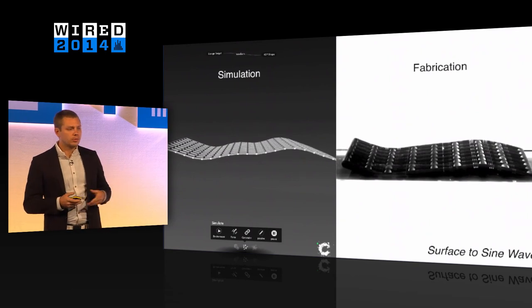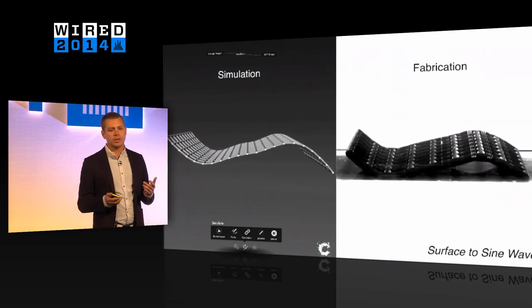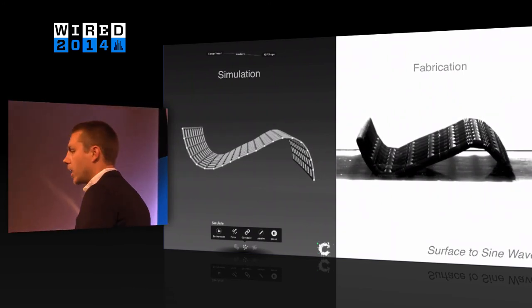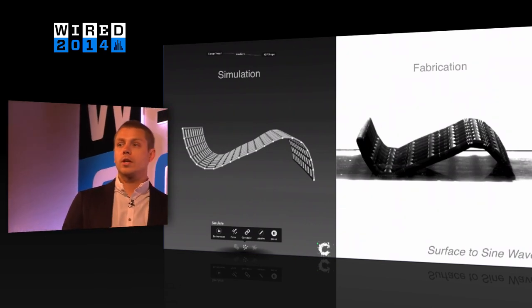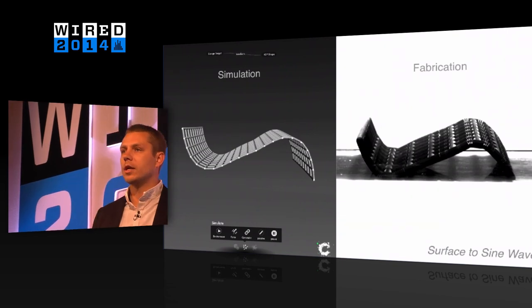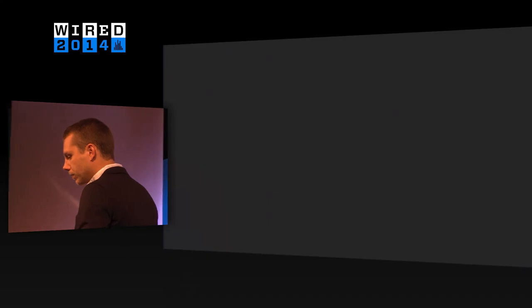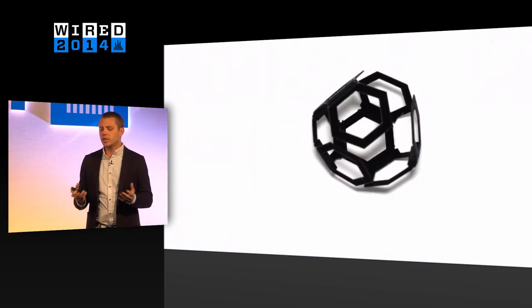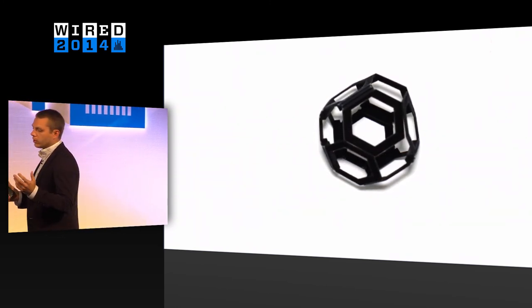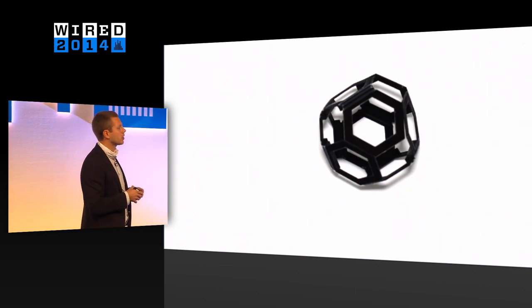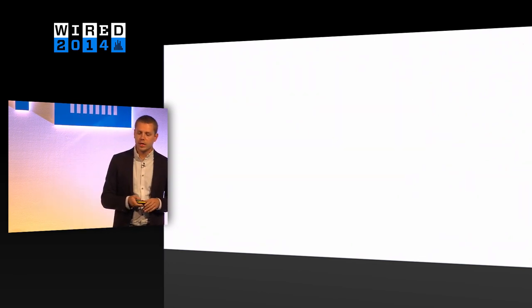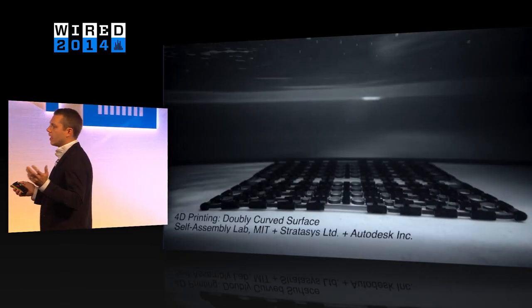We've worked with Autodesk on new software tools so that we can simulate what we're physically building and vice versa — first simulating what's going to happen, then optimizing solutions as they get more complex. We've done a lot of different prototypes, from strands that fold into text to 2D and 3D objects. This is a flat sheet folding into a truncated octahedron, where each angle has a precise angle to get to that shape — showing that flat materials can minimize volume, be shipped flat, and then assemble on the other side.